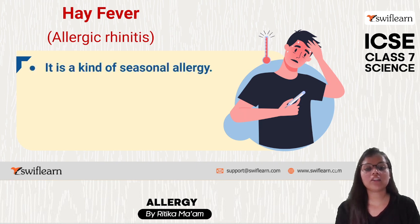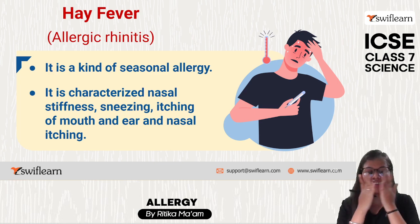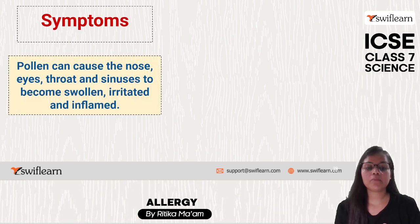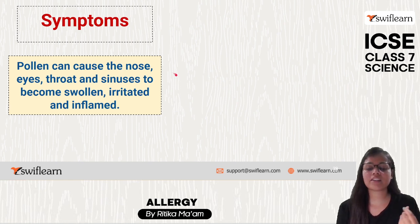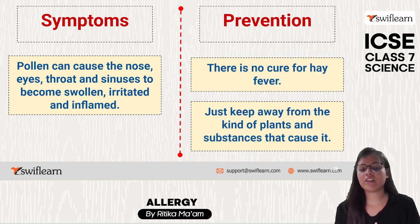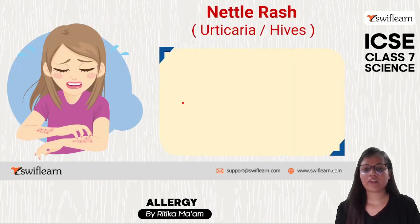Next is hay fever, also known as allergic rhinitis. It is a seasonal allergy characterized by nasal stiffness, sneezing, and itching of the mouth, ears, and nasal area. Pollen causes the nose, eyes, throat, and sinuses to become swollen, irritated, and inflamed, causing itching. Prevention is mainly to keep away from the plants or substances that cause it.